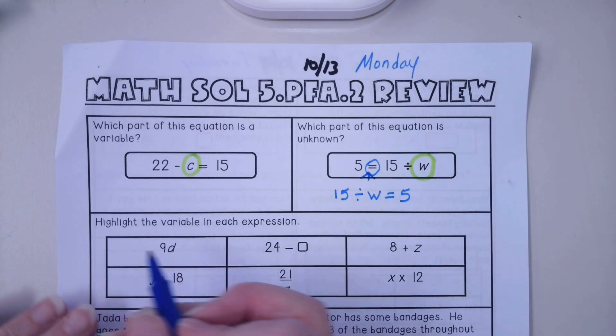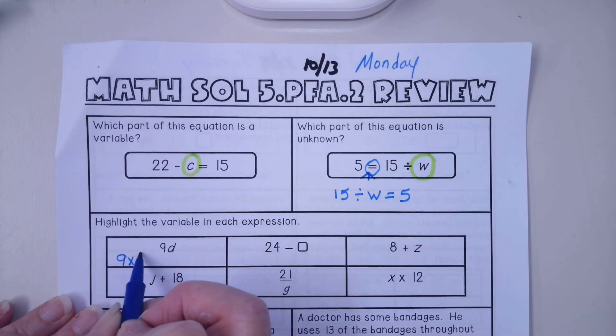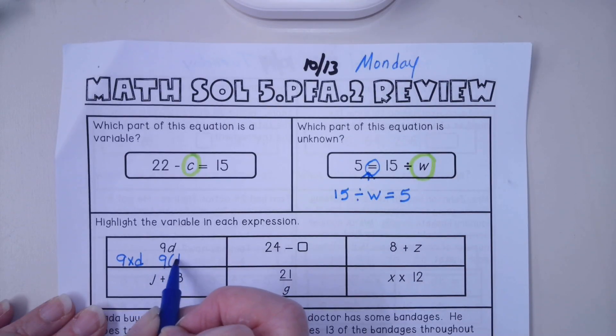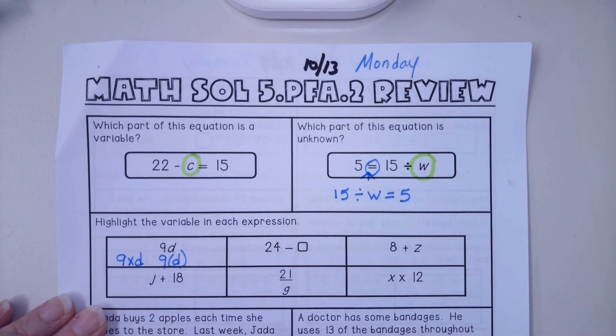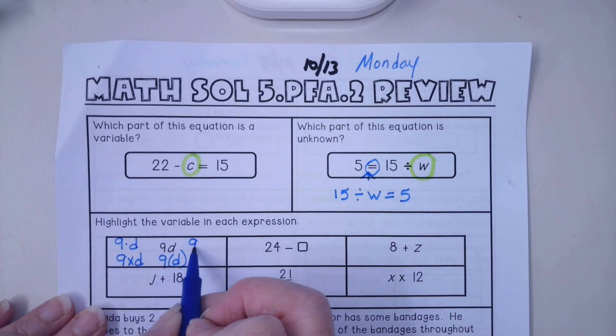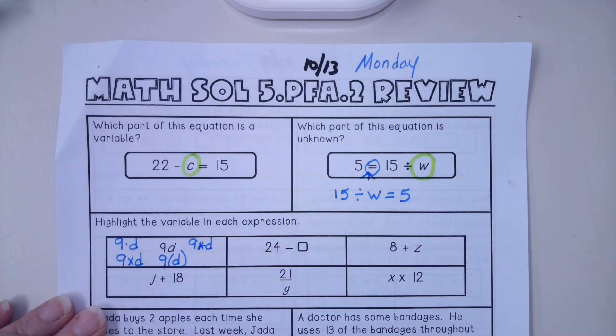This means multiplication, 9 times d. It could be written as 9d or 9 times d. We also learned that it could be written with a dot. And you also learned that it can be written with one of the little stars, like on your computer. I think it is shift 8 for this type of star.